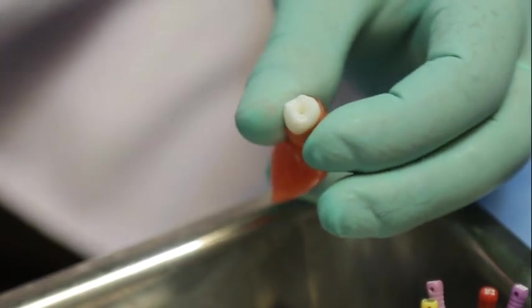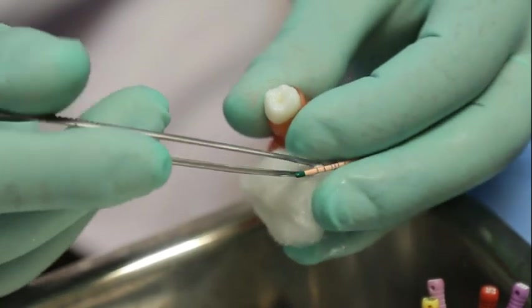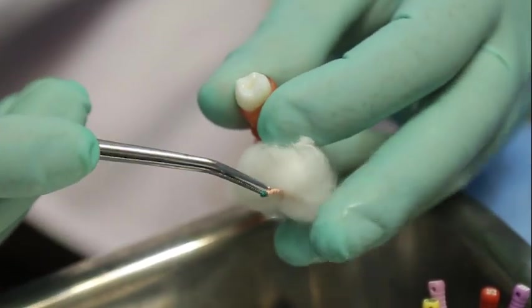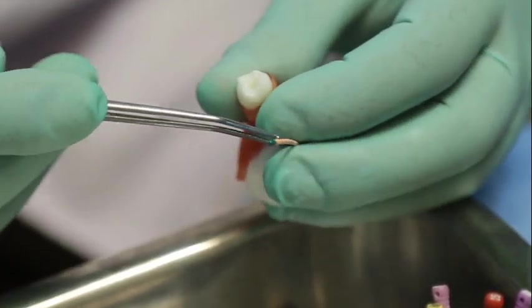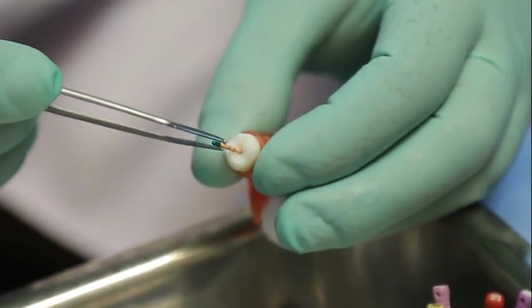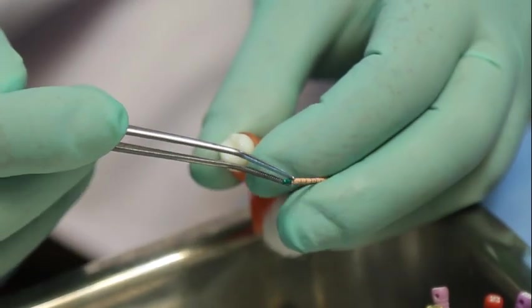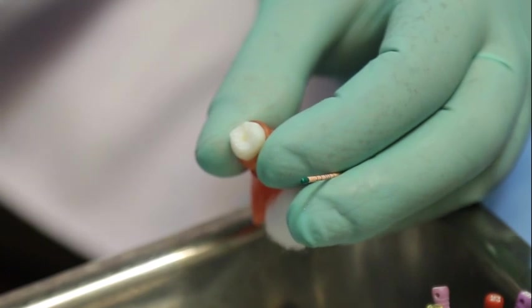Then next is disinfect the GP master cone by putting it in hypochlorite for 2 minutes. After the selection of master cone with radiograph, you can coat the sealer.